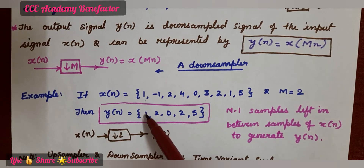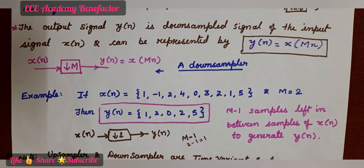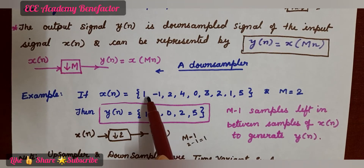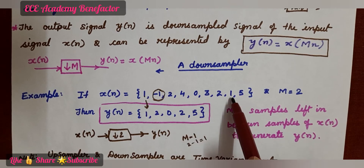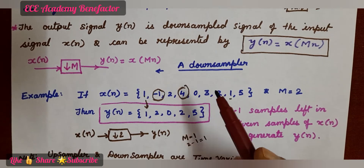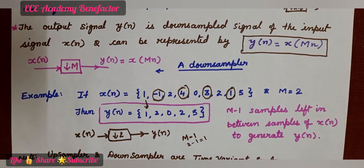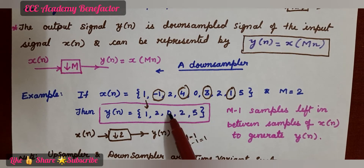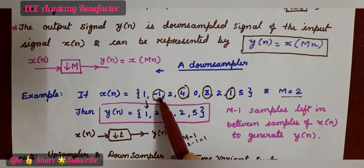We write the first sample as it is — 1 — and then leave M minus 1 samples. M value is 2, so 2 minus 1 is 1, meaning we leave 1 sample. First write 1, leave 1 sample, write 2, leave 1, write 0, leave 3, write 2, leave 1, write 5. So we are leaving 1 sample between every sample — M minus 1 equals 1. What we are left with is: 1, 2, 0, 2, and 5.